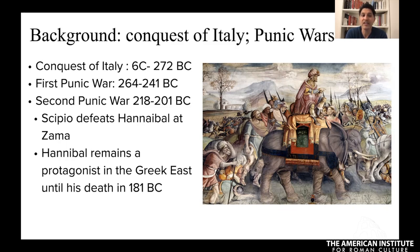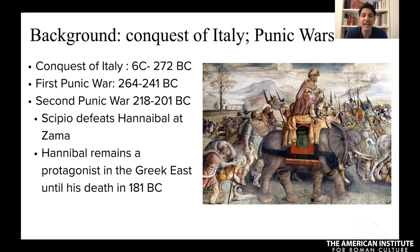With the Second Punic War it's all-out war in Rome's backyard. Famously, Hannibal — shown here in an early 16th century fresco in the Capitoline Museums by Jacopo de Pontormo — loomed large in the consciousness of the Romans. He moved freely throughout southern Italy for quite some time. But finally the Romans moved the war into the backyard of Carthage, and it's there in modern-day Tunisia at Zama that the general Scipio defeats Hannibal.